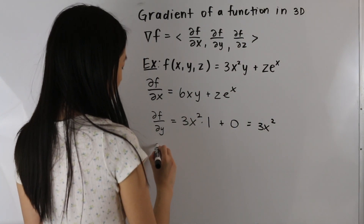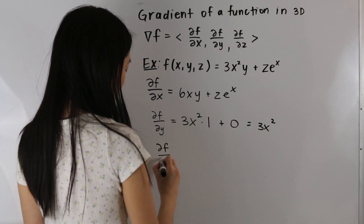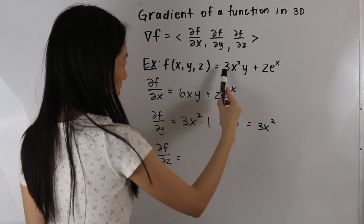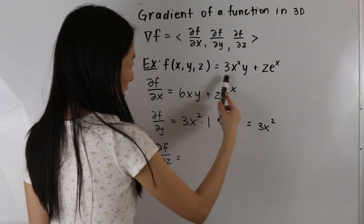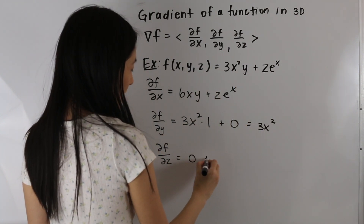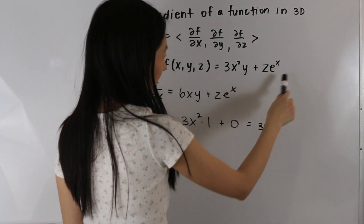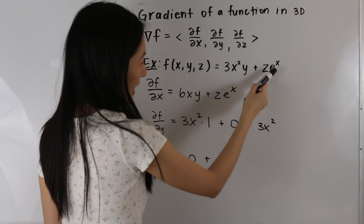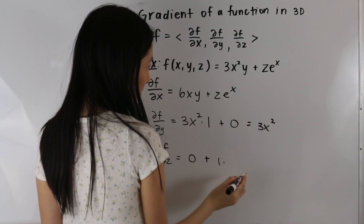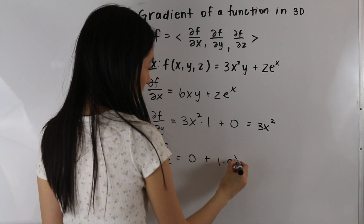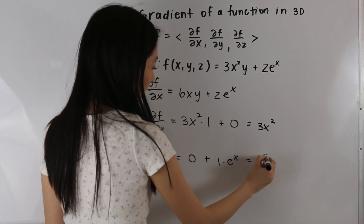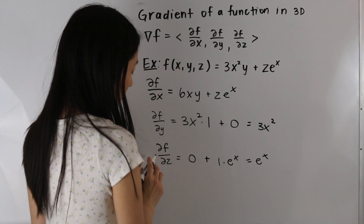Now let's go ahead and take the partial derivative of f with respect to z. In the first term there is no z, so it's just a constant and its derivative is 0. In the second term, e to the x is a constant, and we're just taking the derivative of z, which is 1, multiplied by the constant e to the x. So the partial derivative of f with respect to z is e to the x.